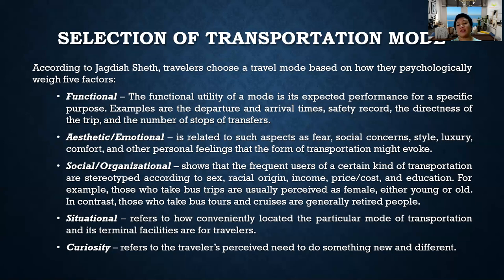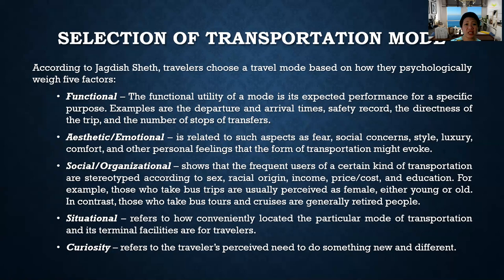Next is situational. It refers to how conveniently located a particular mode of transportation and its terminal facilities are for travelers. People will select the mode of transportation based on the situation they are in. For example, those living in the mountains would prefer to ride a habal-habal or single motor because it is more convenient and accessible. In Manila, any type of transportation is accessible.